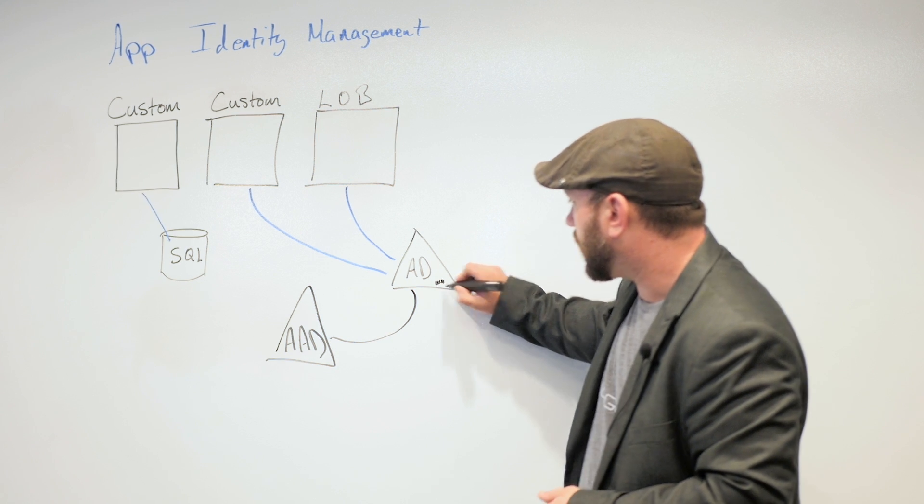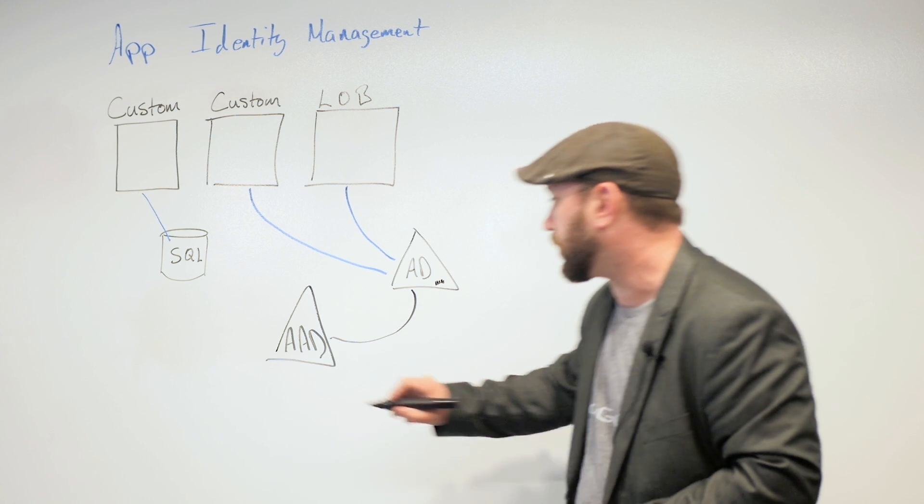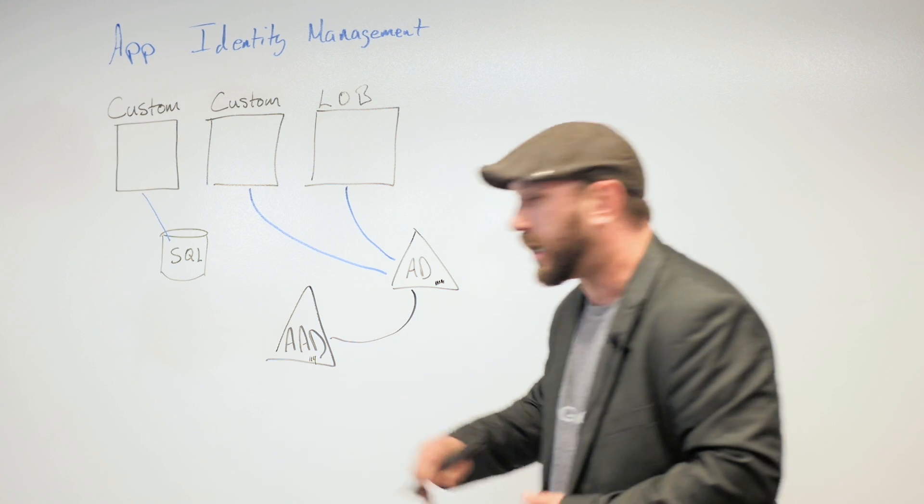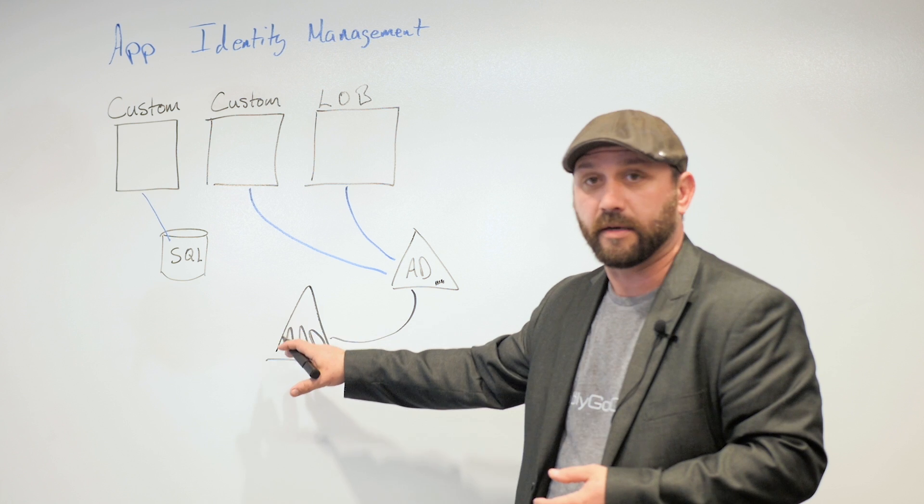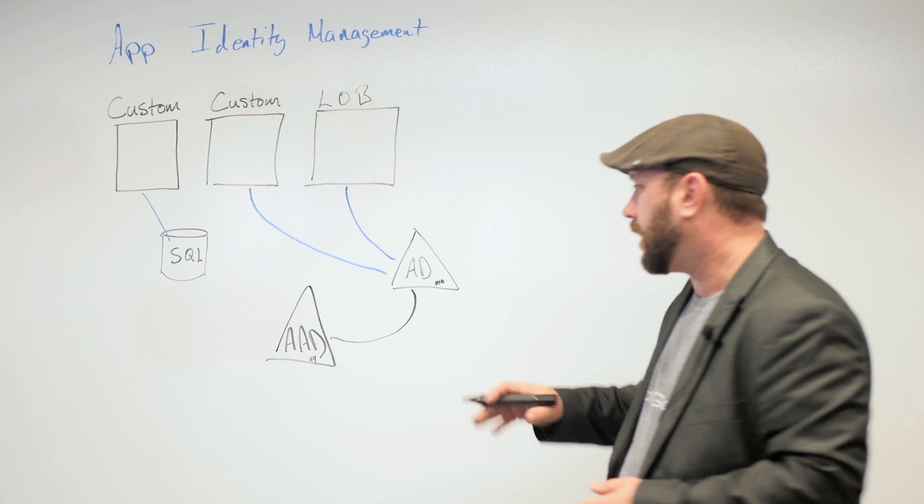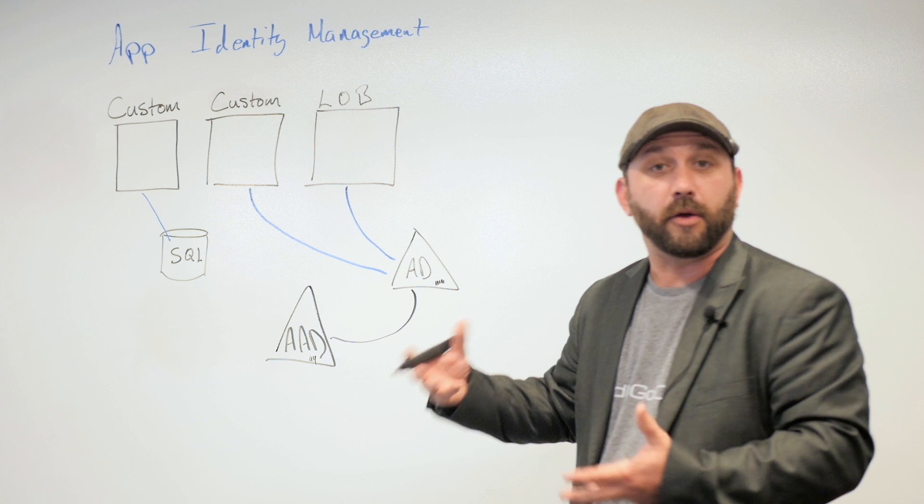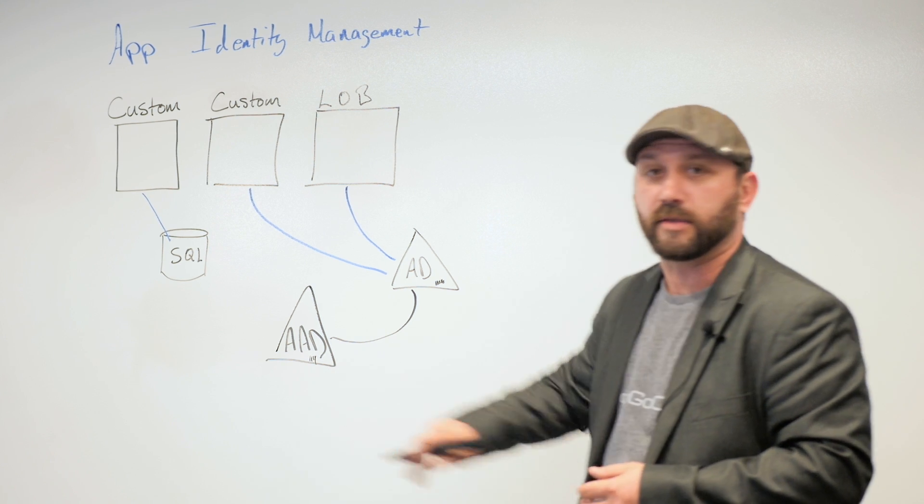When that happens, all of these identities that live inside of AD are also now replicated out to Azure Active Directory. And you've got the choice of putting your identity and your password out there or just your identity. And from there, your users can get into O365 and they authenticate against this tool.